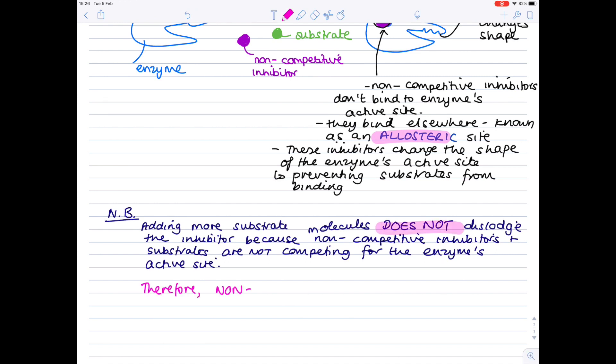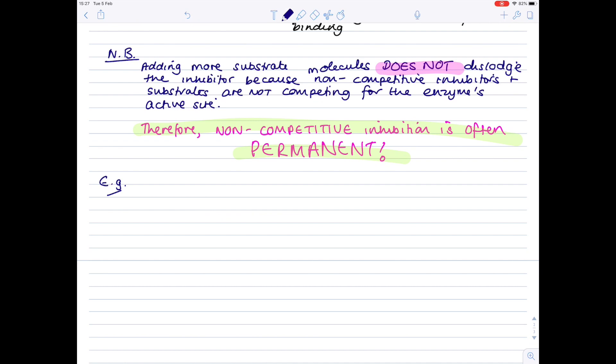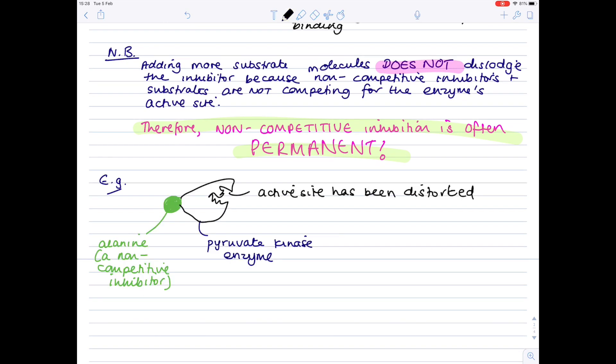Therefore, non-competitive inhibition is often permanent. I really hope I've spelt permanent correctly, but yeah, that's a very key point. And an example of a non-competitive inhibitor is the amino acid alanine, which acts on the enzyme pyruvate kinase involved in respiration. Now, alanine is a non-competitive inhibitor. It binds to pyruvate kinase, therefore preventing the regular substrate entering its active site.